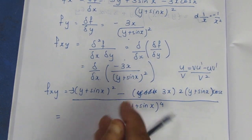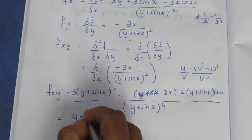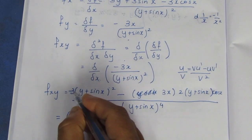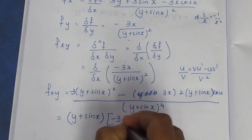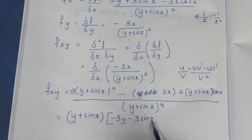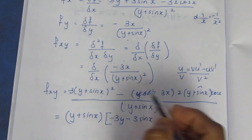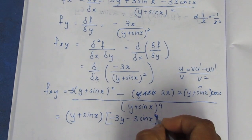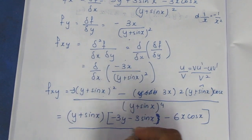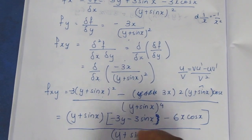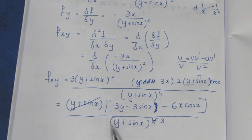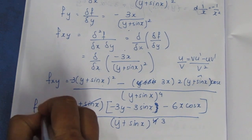We can factor out (y plus sin x) in the middle. Expanding: minus 3 times (y plus sin x) multiplied gives minus 3y minus 3 sin x, and balancing the other term gives minus 6x cos x. After cancelling (y plus sin x), the balance gives f of xy equals minus 3y minus 3 sin x minus 6x cos x, divided by (y plus sin x) whole cube.